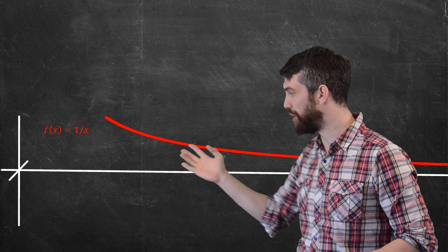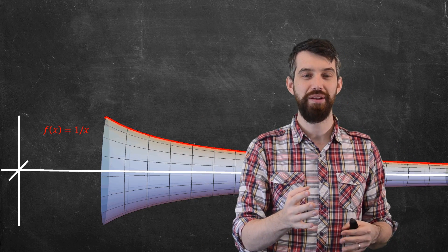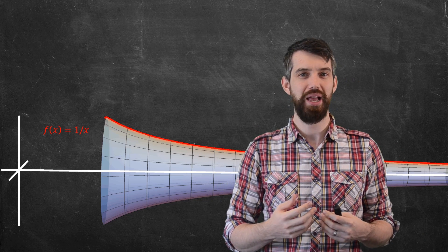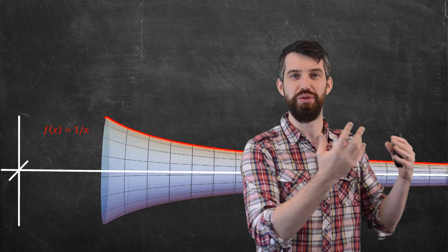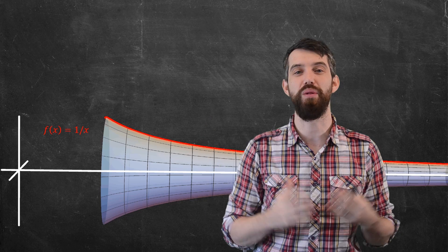And then what I'm going to do is I'm going to take this curve and I'm going to revolve it around the x axis. And this is going to form a surface. Now this looks a little bit like the horn of a trumpet. But because it's going from 1 all the way to infinity, there's this sort of infinite horn. That's what we call Gabriel's horn.